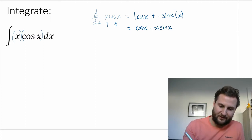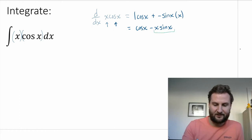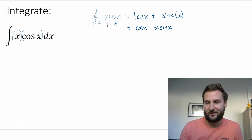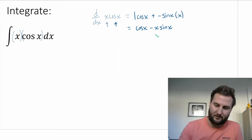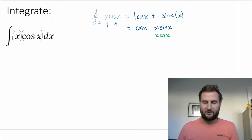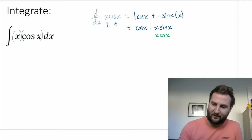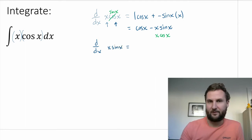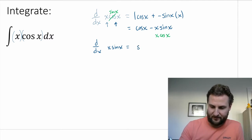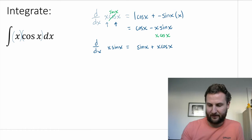We can see some similarities. We've got x sine x here and x cos x there. Sine and cosine just flip-flop back and forth with a negative sign in there. So if we want that second term to be x cos x, let's flip my original cosine to sine x and try again. Finding the derivative of x sine x using the product rule gives us 1 times sine x plus x times cos x.